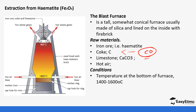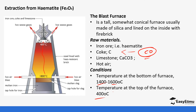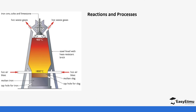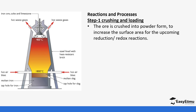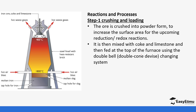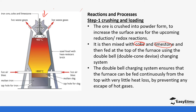Temperatures decrease gradually as you go up the furnace — the temperature at the top is around 400 degrees Celsius. The ore is first crushed into a powder to increase surface area, then mixed with coke and limestone, and fed from the top of the furnace. A double-belt charging system ensures the materials can be fed continuously from the top with very little heat loss.